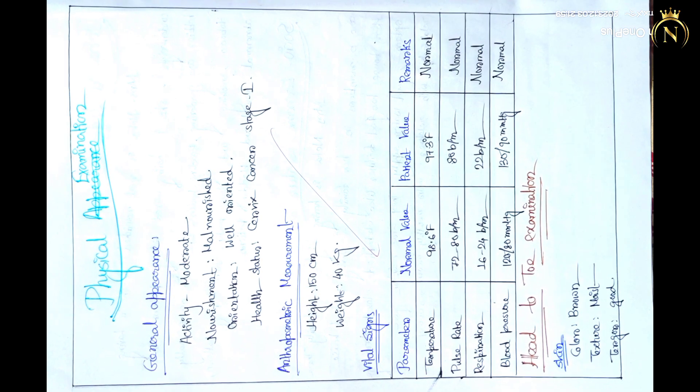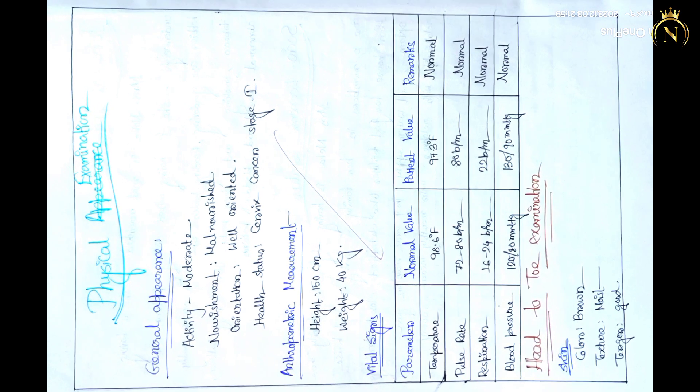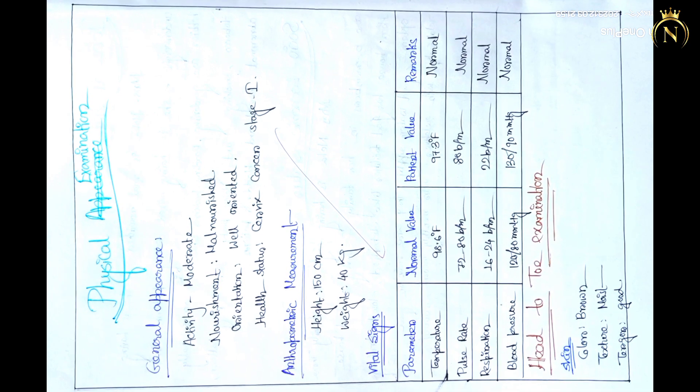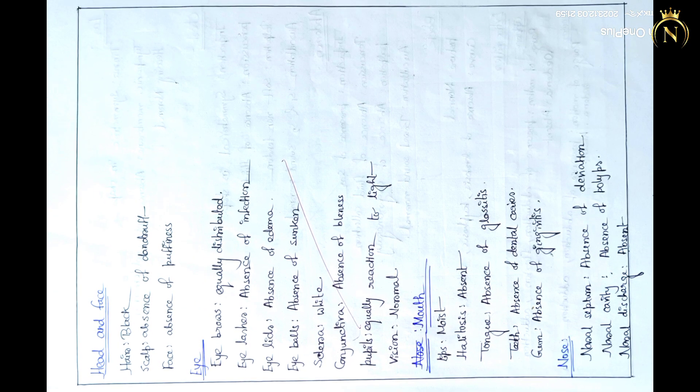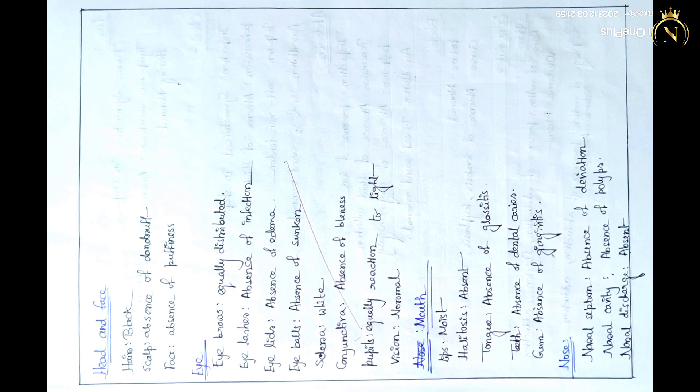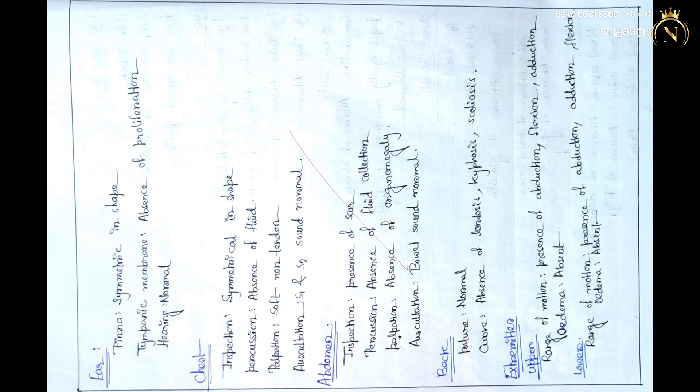Next you have to write the physical examination. You have to assess the physical like the head to toe examination, general assessment, anthropometric assessment - skin, head, eyes, mouth, nose, each part you have to assess and what are the abnormalities you can mention in that physical examination.